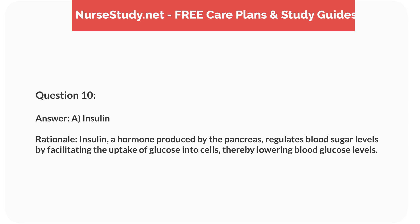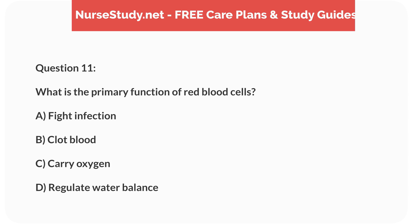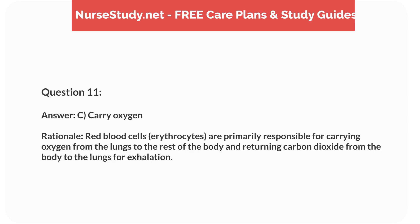Rationale: Insulin, a hormone produced by the pancreas, regulates blood sugar levels by facilitating the uptake of glucose into cells, thereby lowering blood glucose levels. Question 11: What is the primary function of red blood cells? A) fight infection, B) clot blood, C) carry oxygen, D) regulate water balance. Answer: C, carry oxygen.